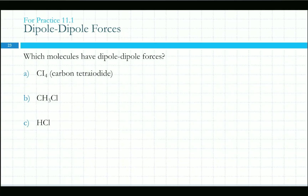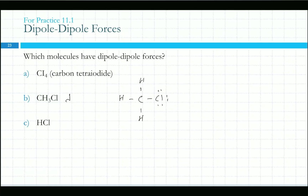Which of these would have dipole-dipole forces? The answer is B. There is a difference in electronegativity, and carbon only has four bonds. What we're looking for is asymmetry, or asymmetric lone pairs on the central atom. This molecule would have a tetrahedral shape, and because the atoms bonded to carbon are not all the same, it would be polar.